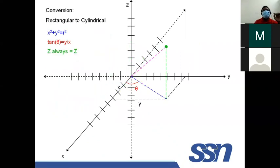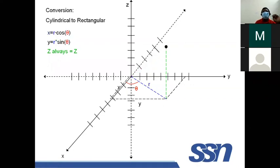For rectangular-to-cylindrical conversion: R squared equals X squared plus Y squared (Pythagoras), tan theta equals Y over X (from the XY plane only), and Z remains the same. The inverse formulas are X equals R cosine theta and Y equals R sine theta — these are the projections of R onto the X and Y axes respectively.